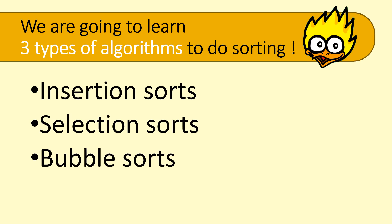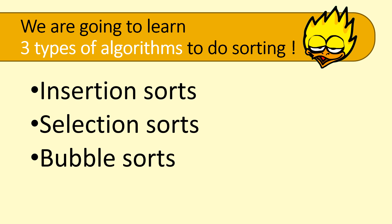And we are going to learn three types of algorithms to do sorting. The first one is insertion sort, which we are going to learn deeply first. The second is selection sort. And the third one is bubble sort. Each method of sorting has its own advantages and disadvantages. Okay guys, see ya!